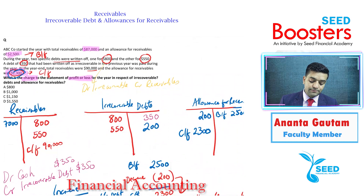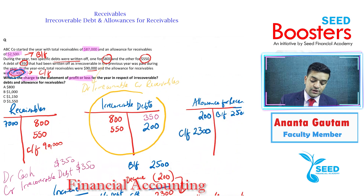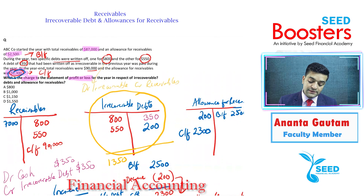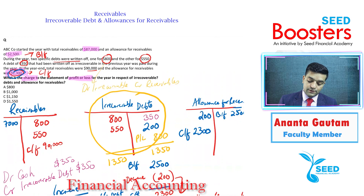Looking at the irrecoverable debts T-account: the debit side totals 1,350 (800 + 550), and the credit side has 350 (recovered debt) plus 200 (decrease in allowance), totalling 550. The balancing figure to profit and loss is 800. So the P&L charge is 800.